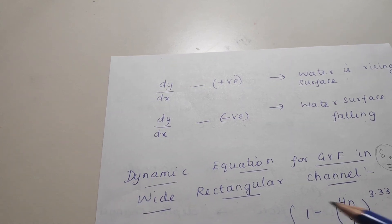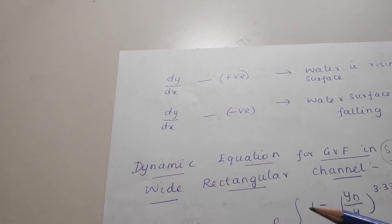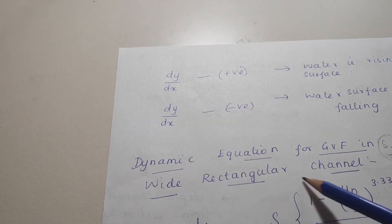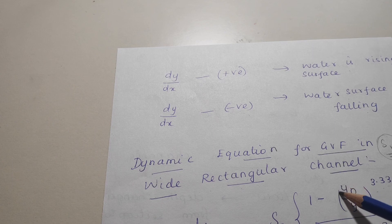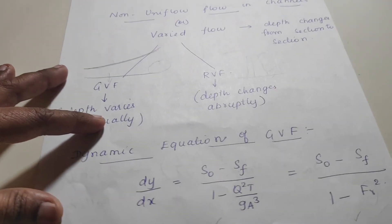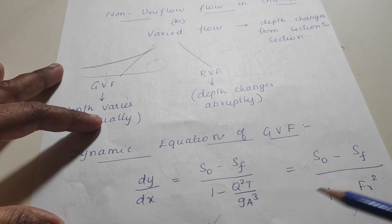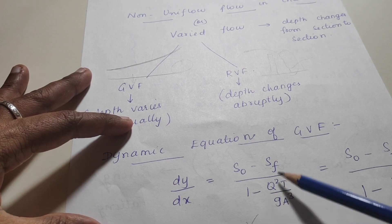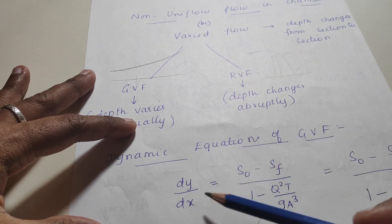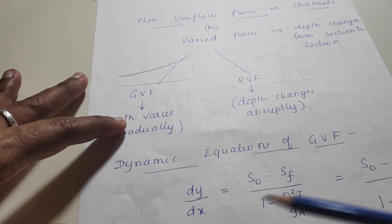To summarize the dynamic equation for GVF, there are three formulas. First, for a wide rectangular channel when yn, yc, and y are given. Second, when only the Froude number is given. Third, when discharge, area, and related values are given — use that formula to find the rate of change of flow.